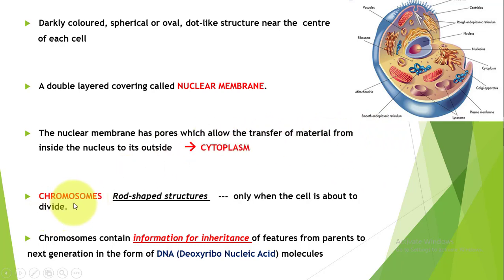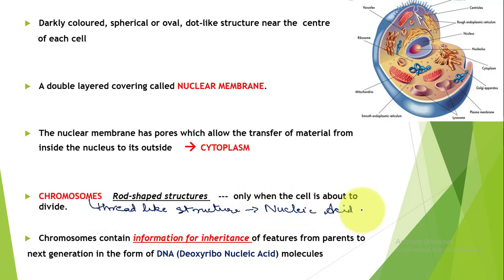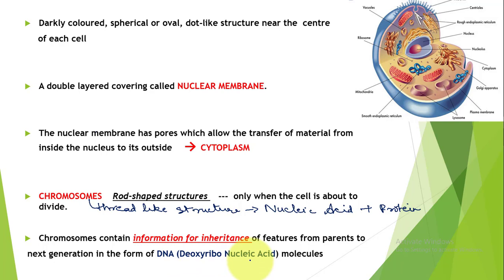Inside the nucleus, chromosomes are present. These are thread-like structures made up of nucleic acid and protein. Chromosomes take their rod-like form only when the cell is about to divide. Chromosomes contain all the information for inheritance - the complete genetic information. This genetic information passes from parents to the next generation in the form of DNA, which is deoxyribonucleic acid.